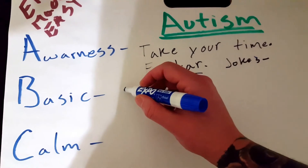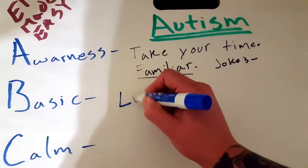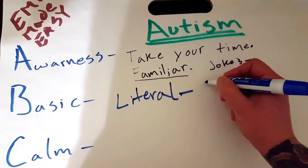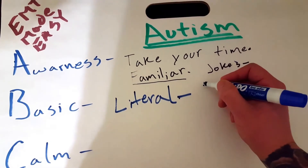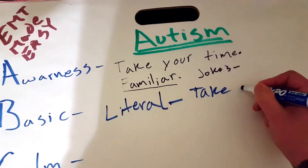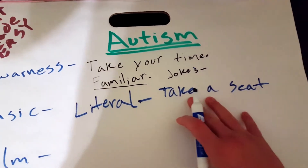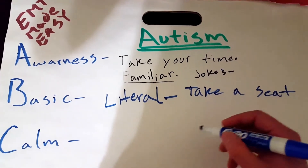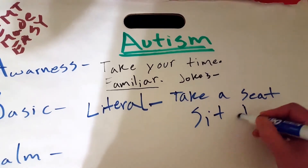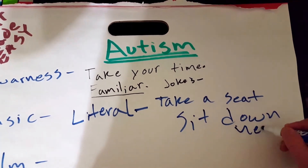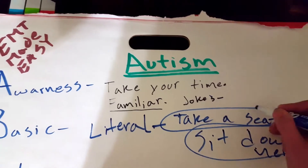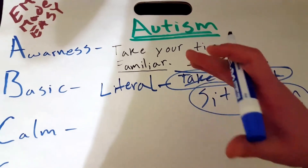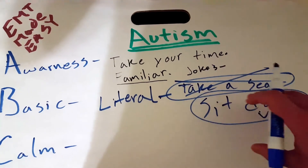Keep everything Basic, because they might take things literally and you don't want that. For example, instead of saying 'take a seat,' most of us would say that naturally, but if you say this to an autistic patient they might think you literally want them to take a seat somewhere and they'll take it or look at you funny. Instead, just be straightforward and say 'sit down here.' Keep things basic — that's the best way to put it. Watch what you say, and don't say jokes because they might take it literal.